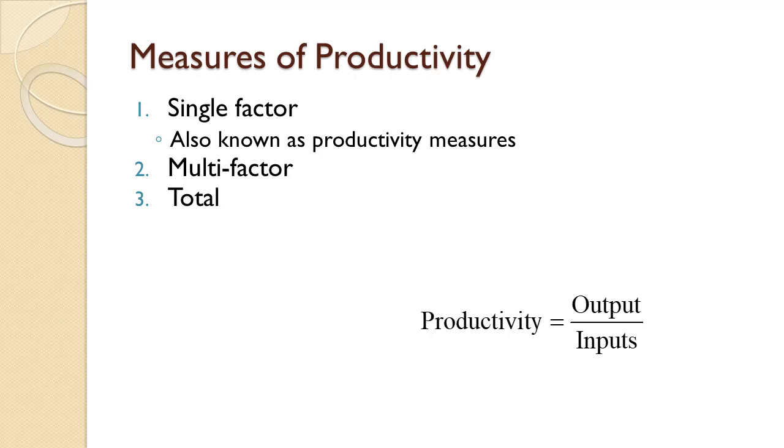There are three related measures of productivity. All three are calculated as output divided by inputs. What differs are the components used as inputs. In all cases, output is the same and can be measured in either dollars or units.